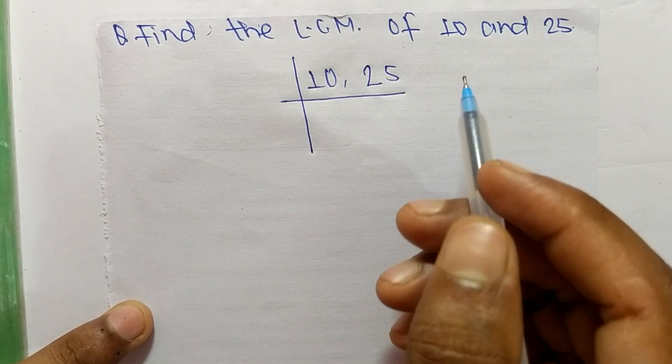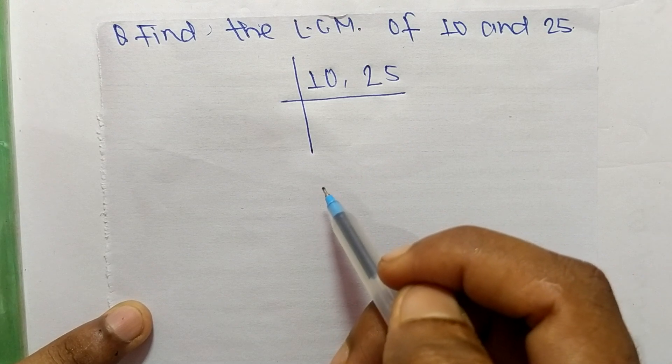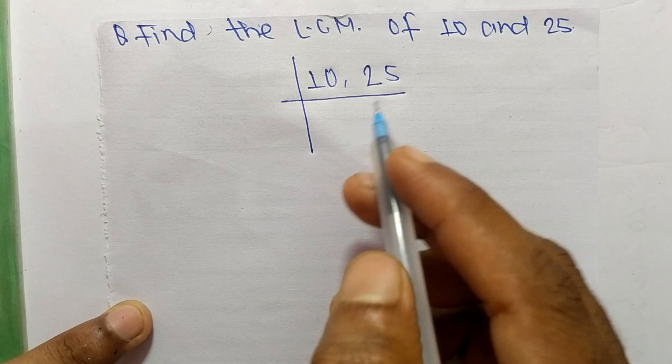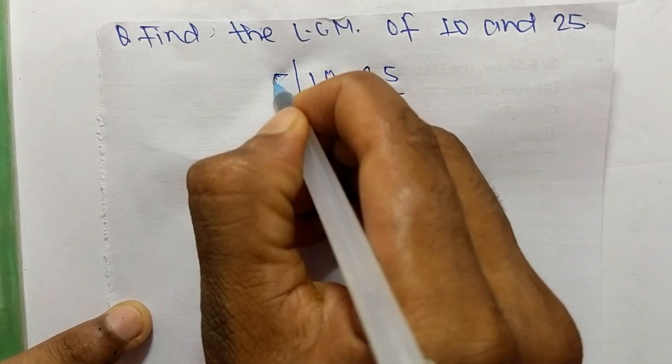To find LCM first of all we choose the lowest number which can exactly divide 10 and 25. So the number is 5.